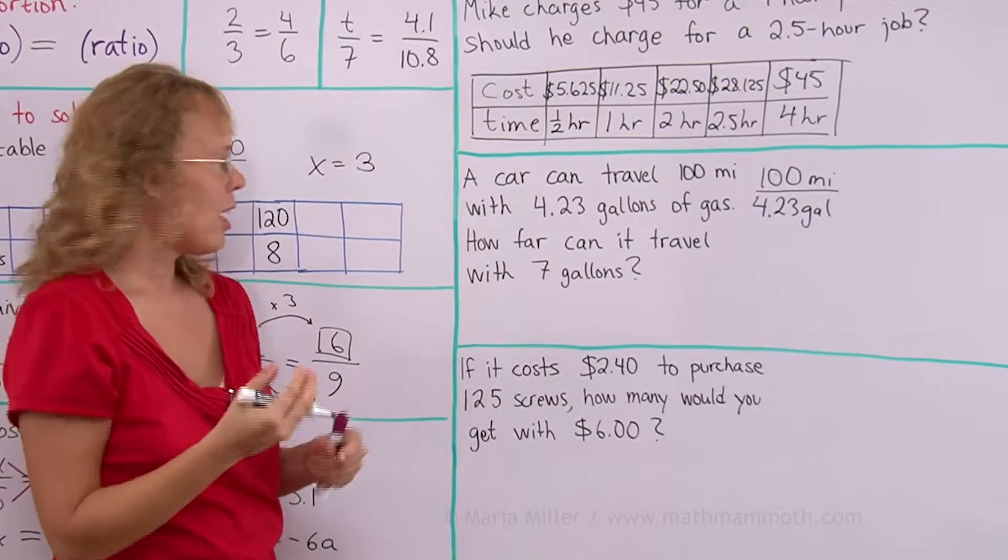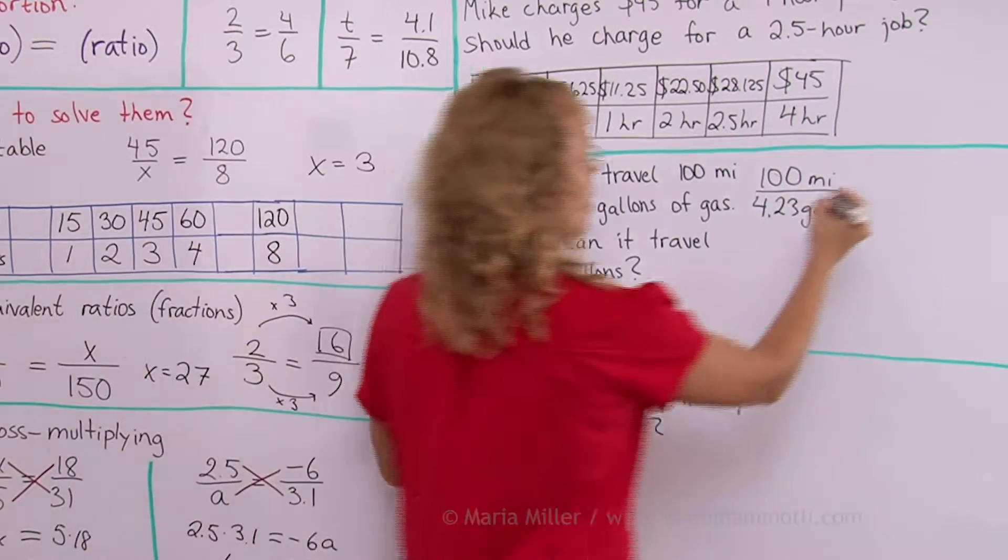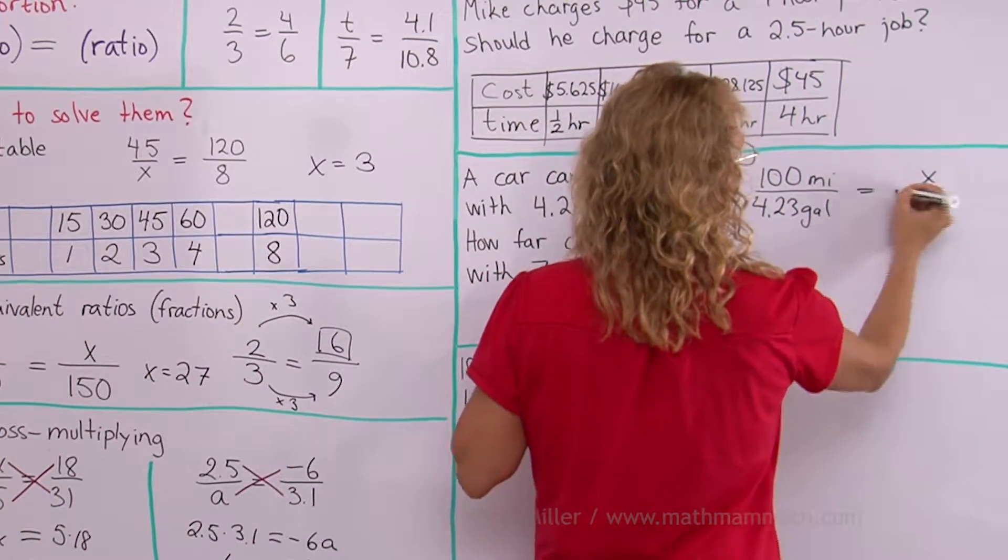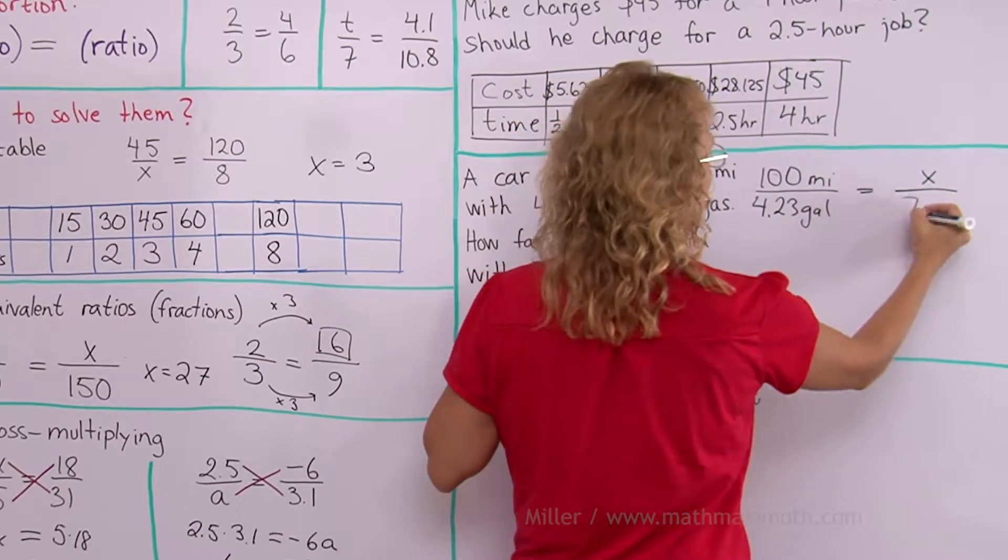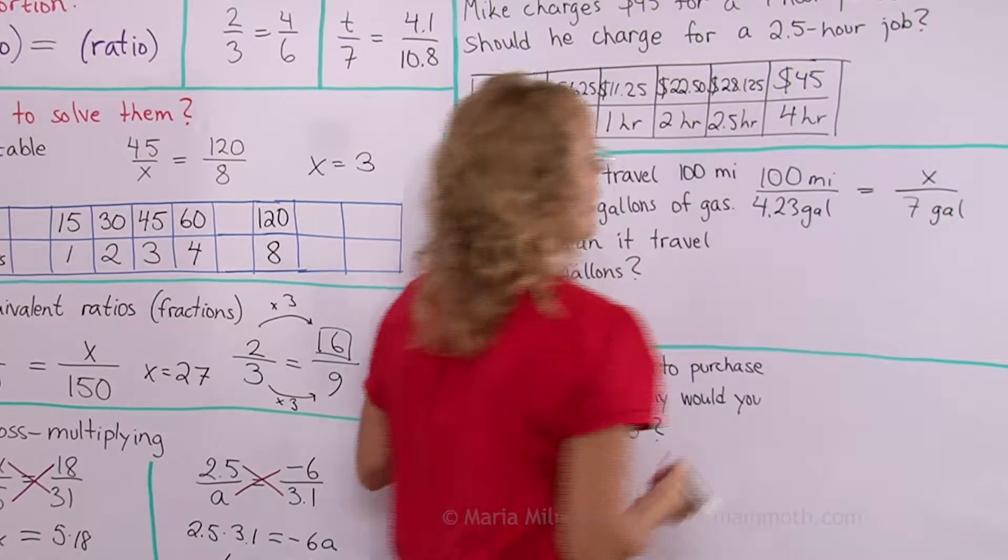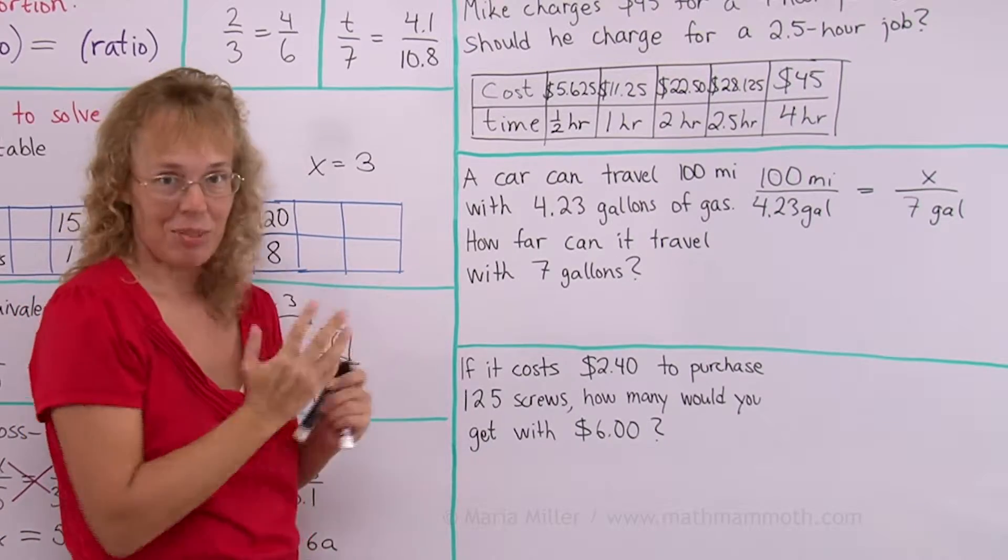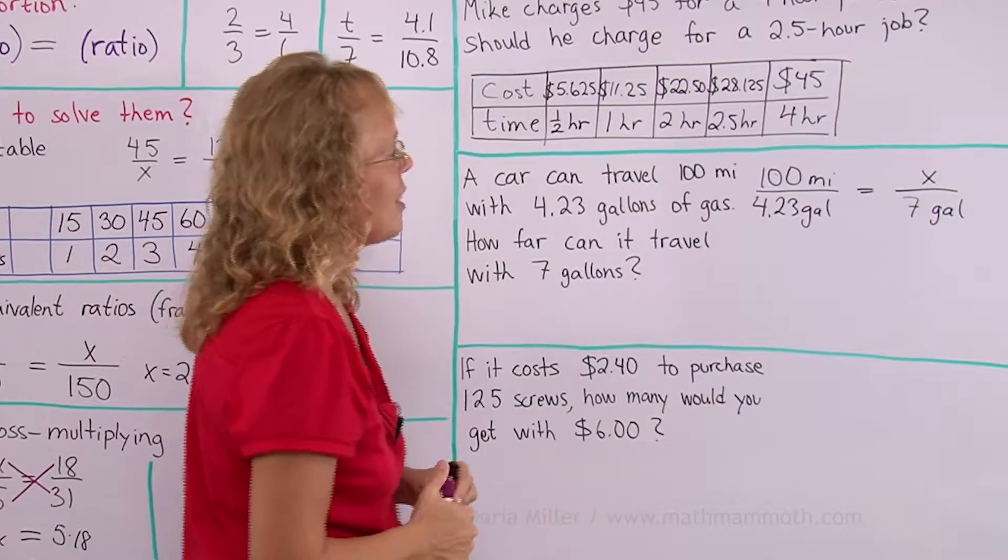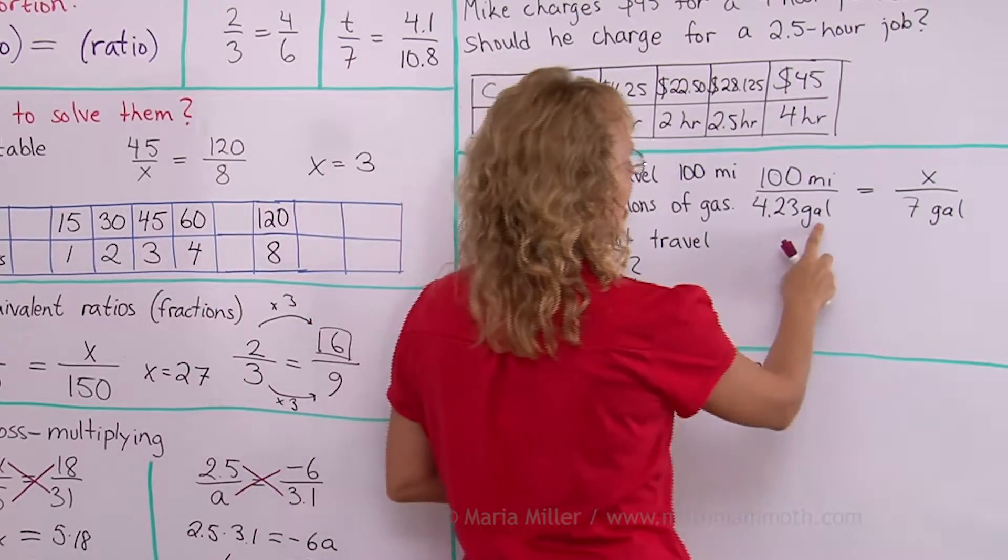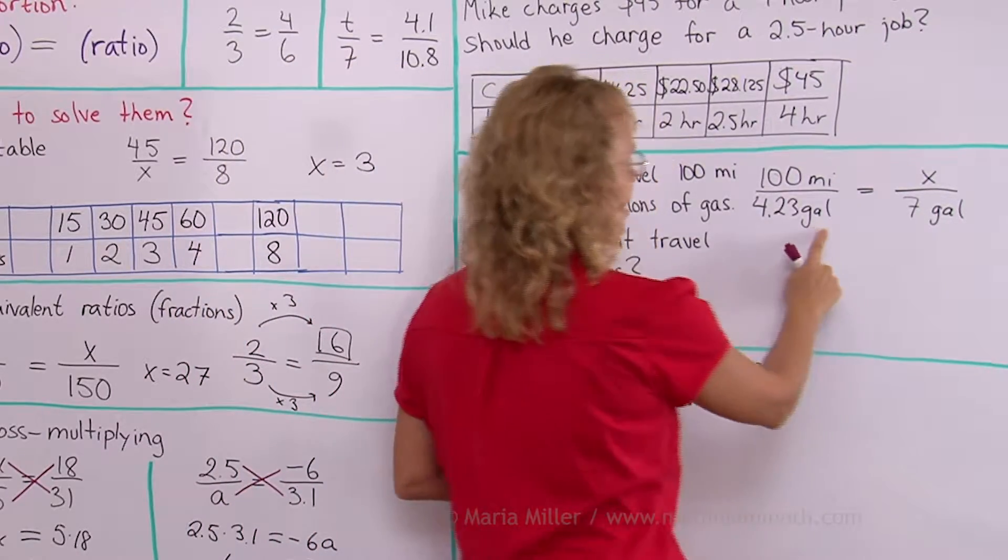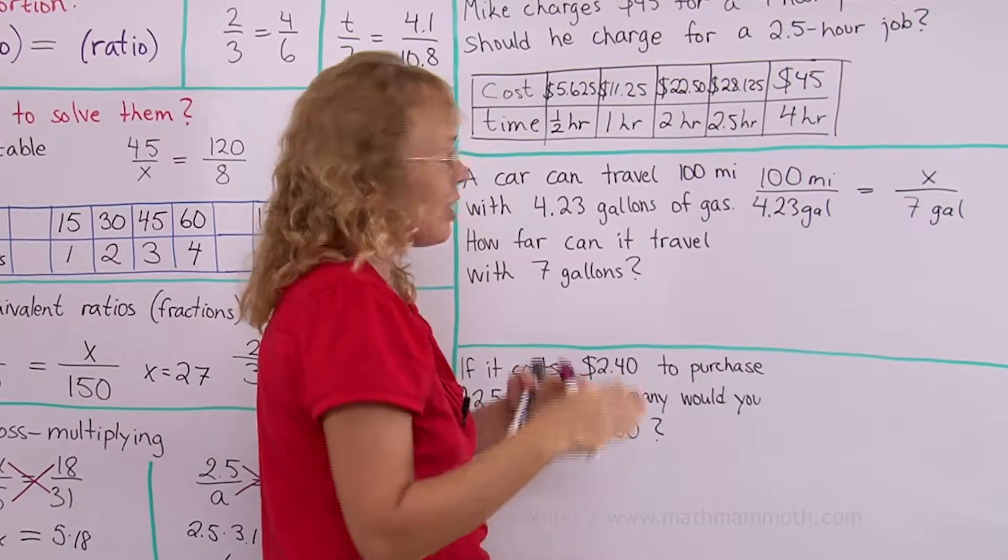And then in the other ratio we have the unknown. We just know the gallons but we don't know the miles. So there's gonna be unknown amount of miles to 7 gallons. That's my setup for the proportion and this step is very important that you set it up right. Because if you don't then you will get the answer wrong. Notice that the gallons are in both cases in the denominator.